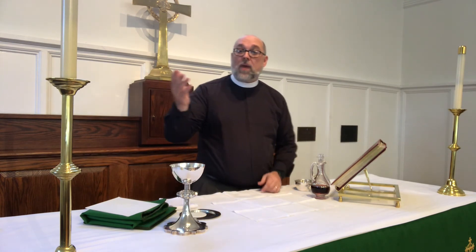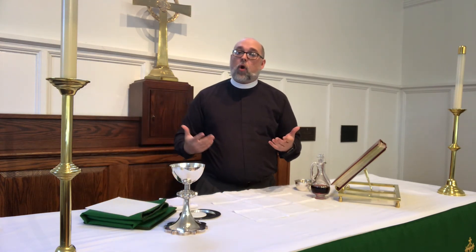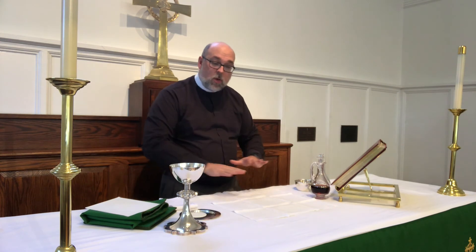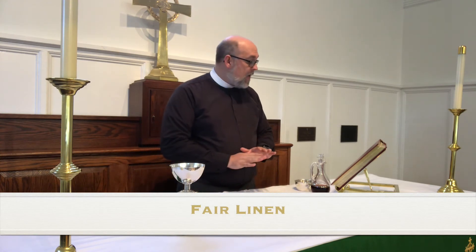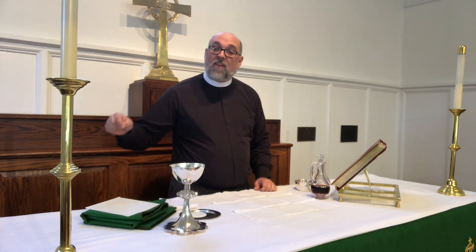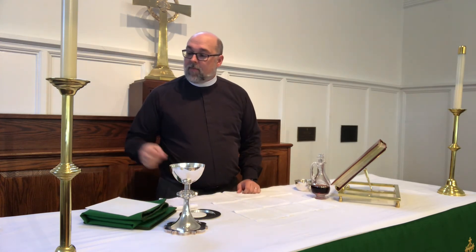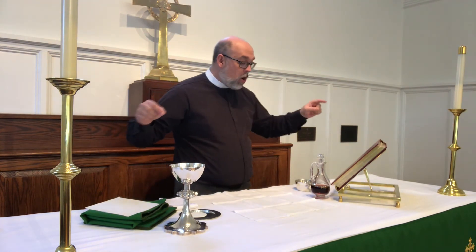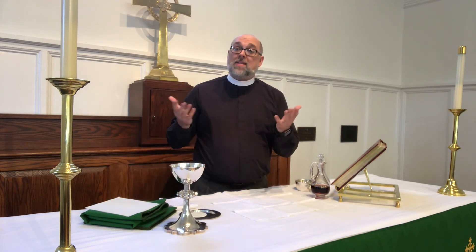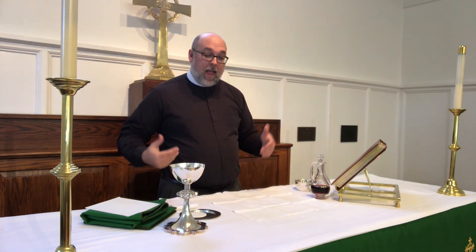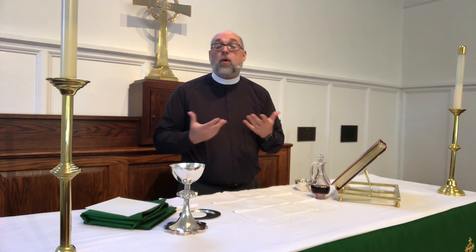Also we have on the altar the Eucharistic lights — the candles — which remind us of the light of Christ always here present with us. There's also a large covering that goes over the altar called the fair linen. It is a long linen and it has five crosses on it — you may not even know this unless you are up here. There are five crosses: one on each corner and one in the middle, and those signify the five wounds of Christ in his hands, his feet, and his side.